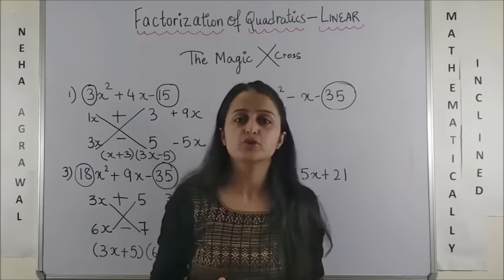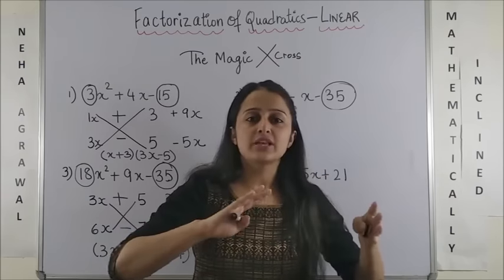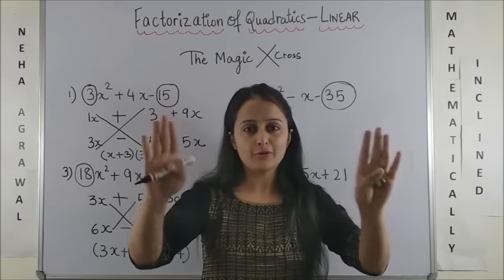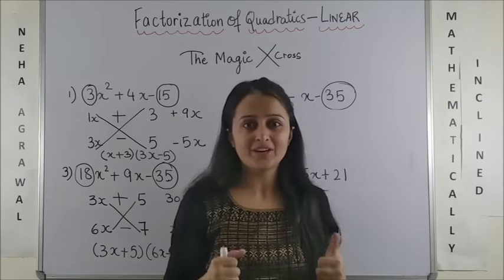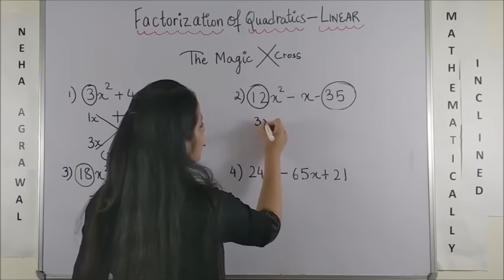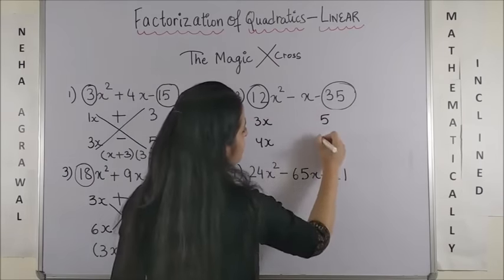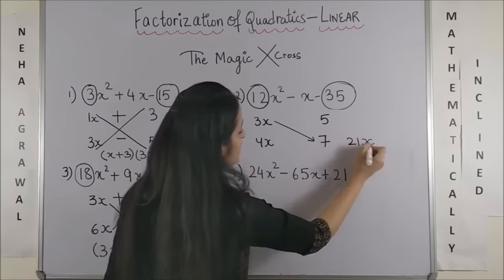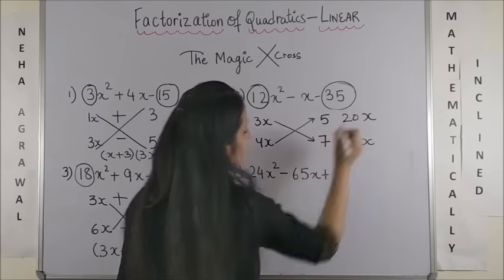Now with the next one, again you can have a lot of choices with 12. 1 into 12, 2 into 6, 3 into 4. With experience, trust me, it comes across straight. Okay, I can try this factor and it would work very well. So, like here I would like to try 3x and 4x and for 35 it's simple 5 into 7. Now,